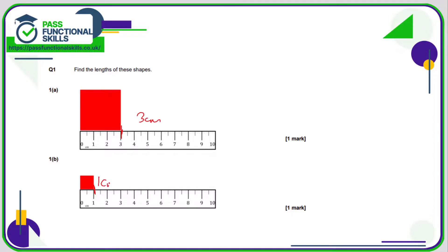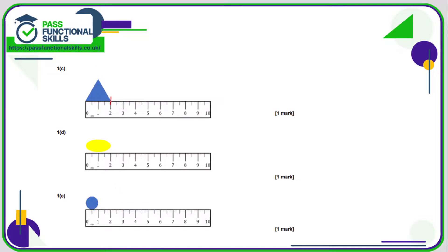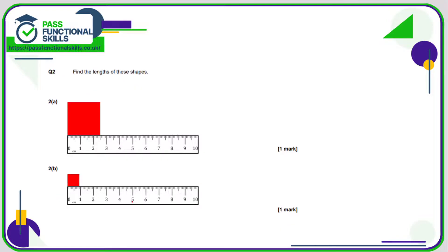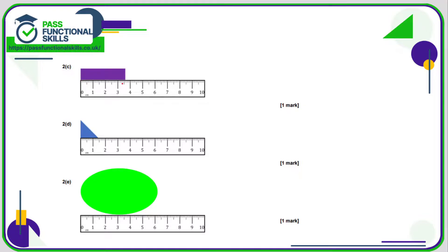They've conveniently put a ruler up against them, so we can see that that is three centimeters. That is one centimeter. For the blue triangle that goes up to two centimeters. The yellow oval, we'll call that two centimeters as well, whereas the octagon is one centimeter. This square goes up to 2.5.